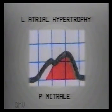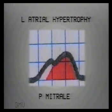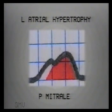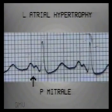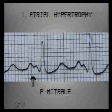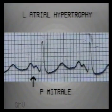In left atrial hypertrophy, the second component is delayed and prominent, producing a wide and notched P wave wider than 2.5 small squares. Since this is common in mitral valve diseases, it is termed P mitrale. Note the P mitrale shown: notched and 3.5 small squares wide — width more than 2.5 squares is the main criterion.